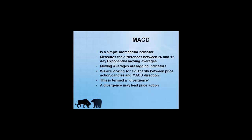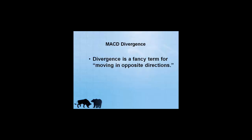MACD is a simple momentum indicator. It measures the differences between 26- and 12-day exponential moving averages. Moving averages are lagging indicators, and we're looking for a disparity between price action — which is the movement in the candles — and the direction of MACD. This term is called divergence. A divergence may lead to price action.